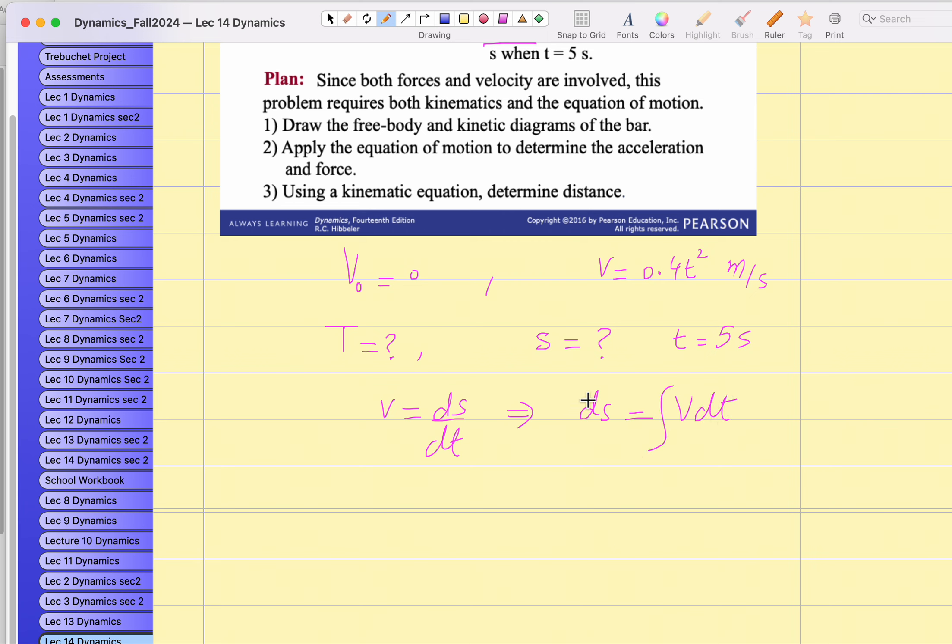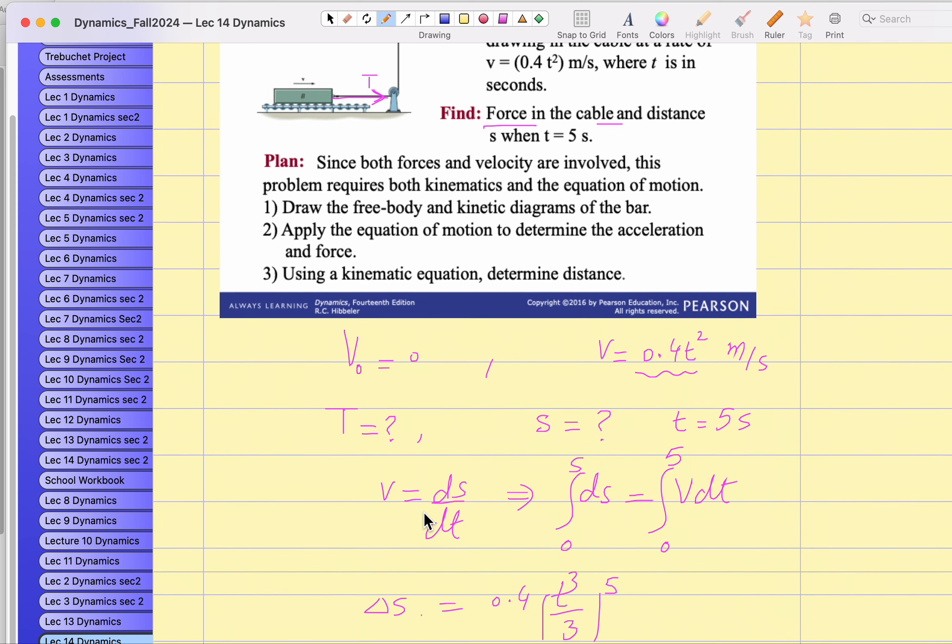From zero to suppose S, and from zero to five seconds, so velocity expression is given. So if I do the integration of 0.4t², what should be the integration of 0.4t²?